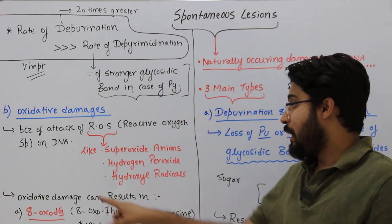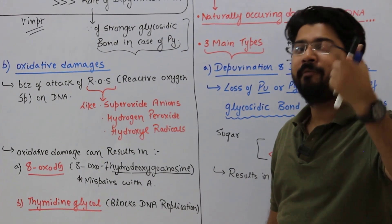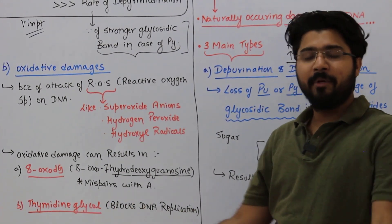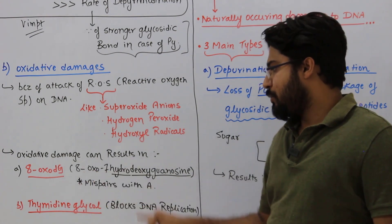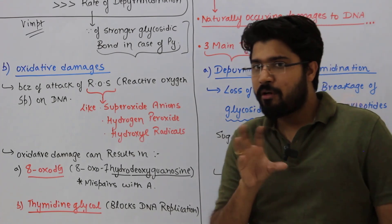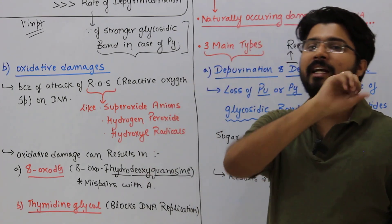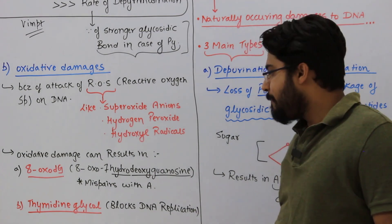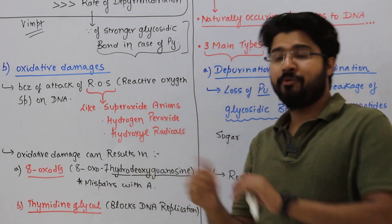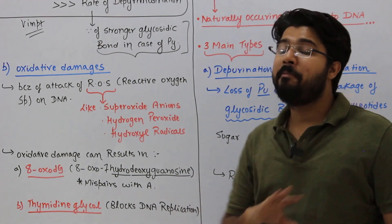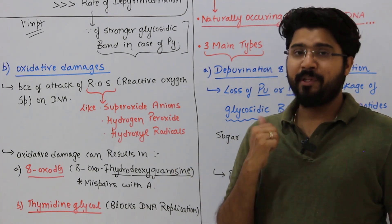Oxidative damage produces modified DNA bases that can alter DNA replication and gene expression. One such product is 8-oxo-dG, full form 8-oxo-7-hydro-deoxyguanosine — a modified guanine nucleotide generated after ROS attack. The problem with 8-oxo-dG is its tendency to mispair with adenine. Another modified product is thymidine glycol, formed from thymine, which completely blocks DNA replication, though the exact mechanism is not fully understood.